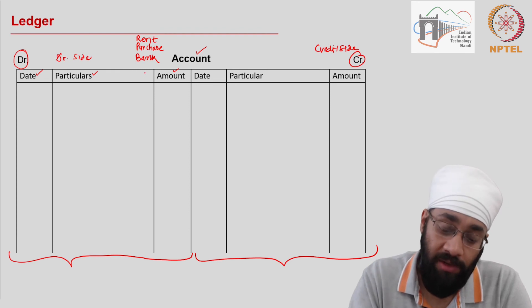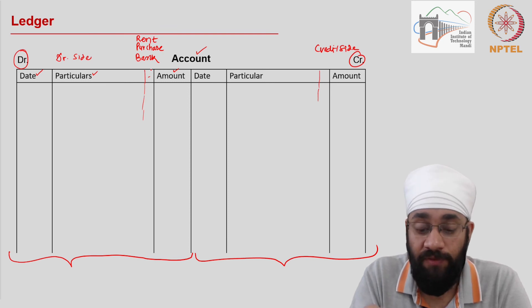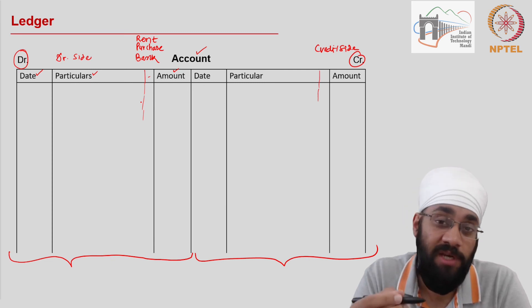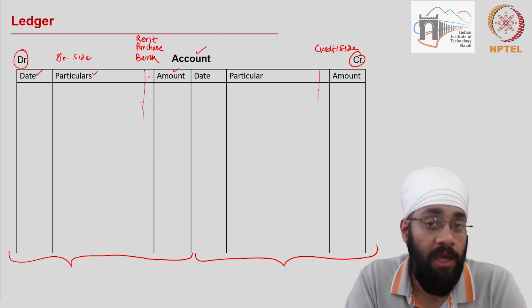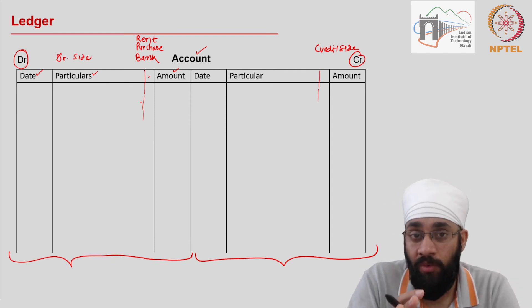You will see in the textbooks that there is another column here which is kind of a reference number, a ledger folio, which you could give in order to refer to which transaction where in the journal was this transaction written. Again I do not intend to make you an accountant.